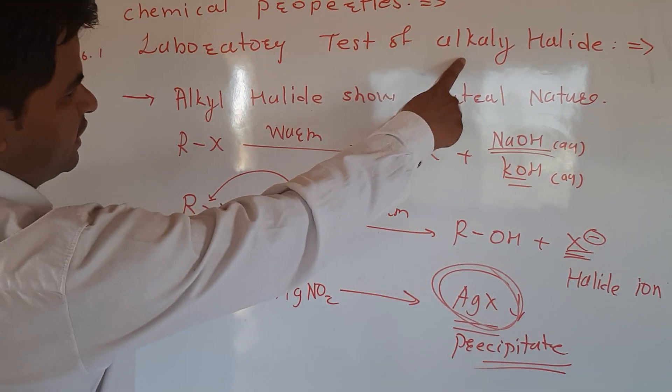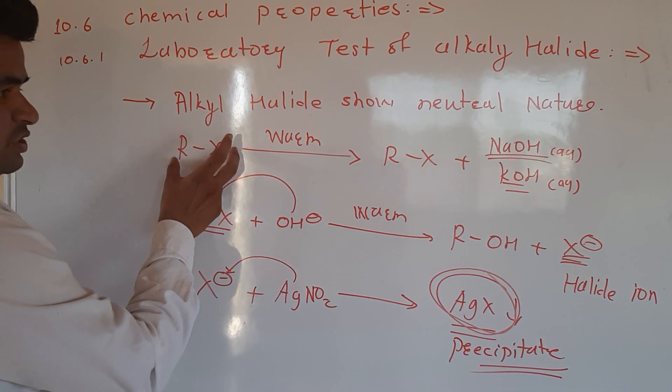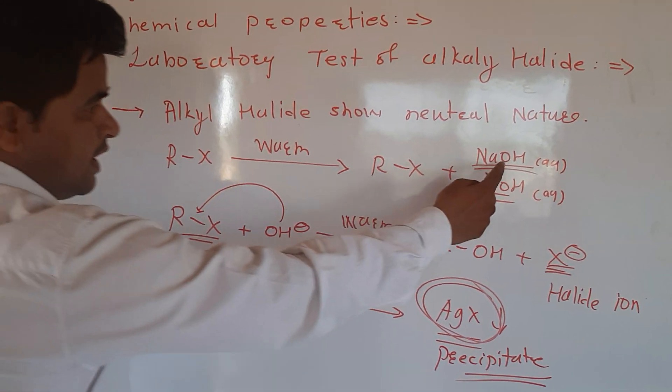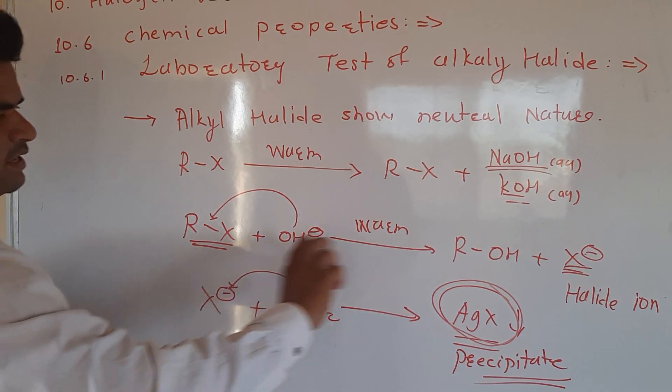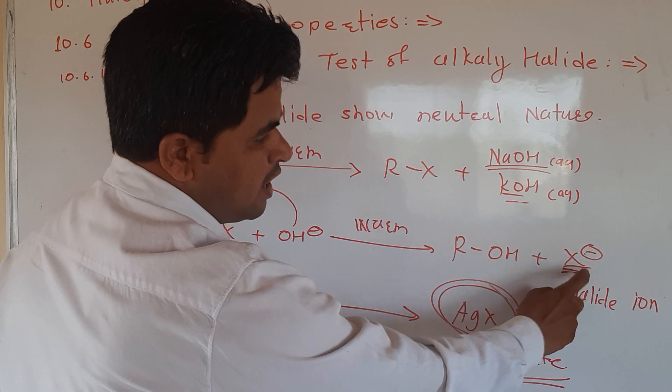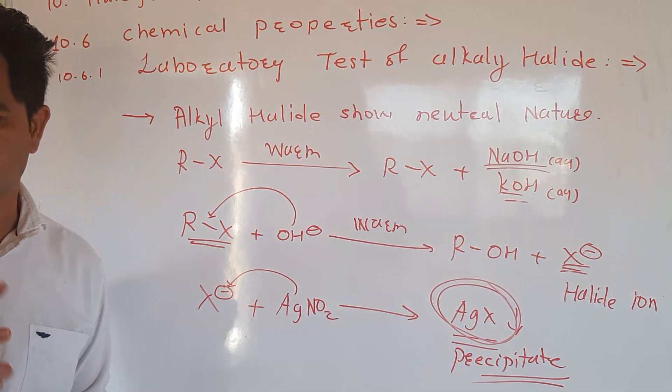This is the laboratory test of halide. First thing, we have to add sodium hydroxide or KOH. Then it is warmed. The halide ion separates. The halide ion in the reaction mixture is present.